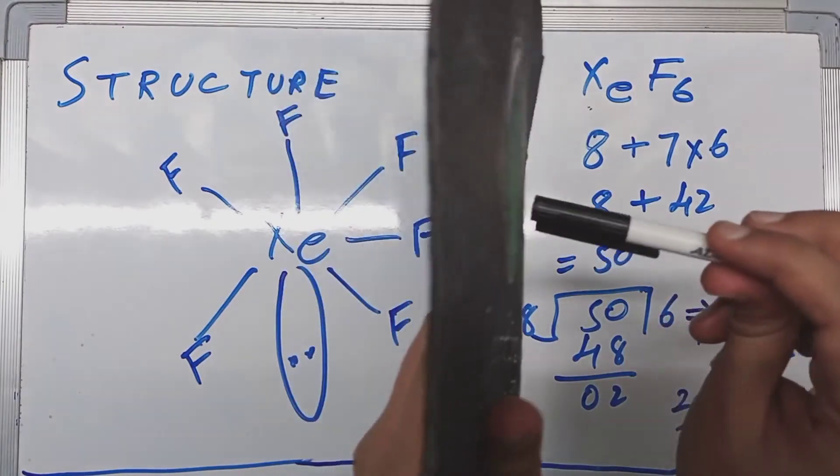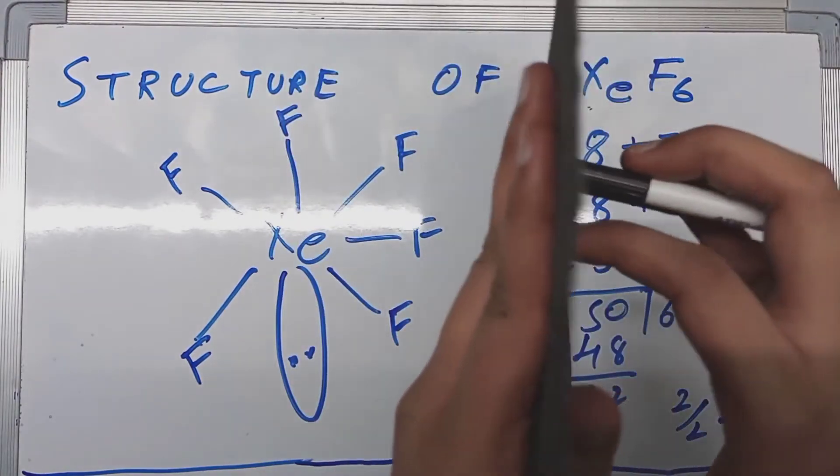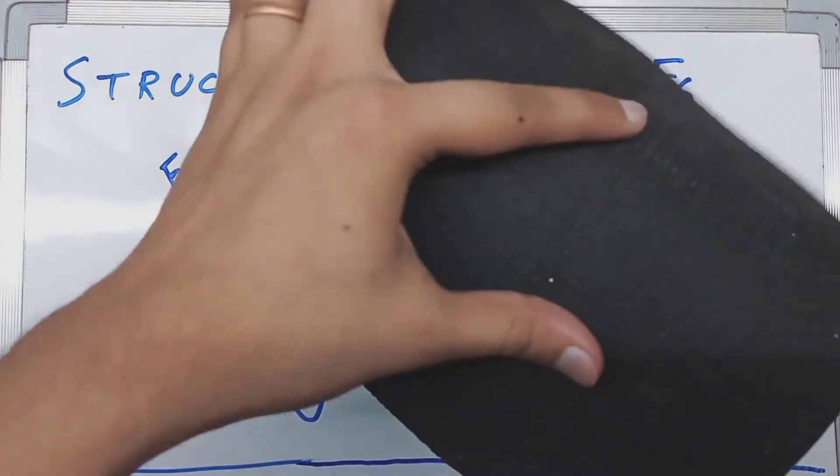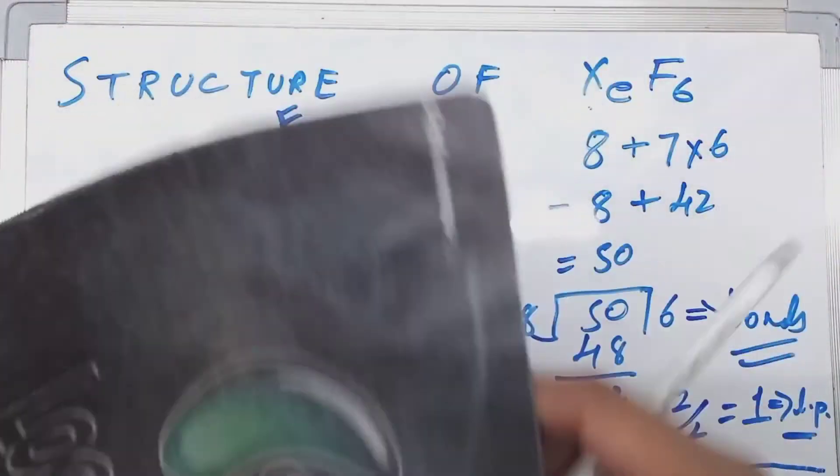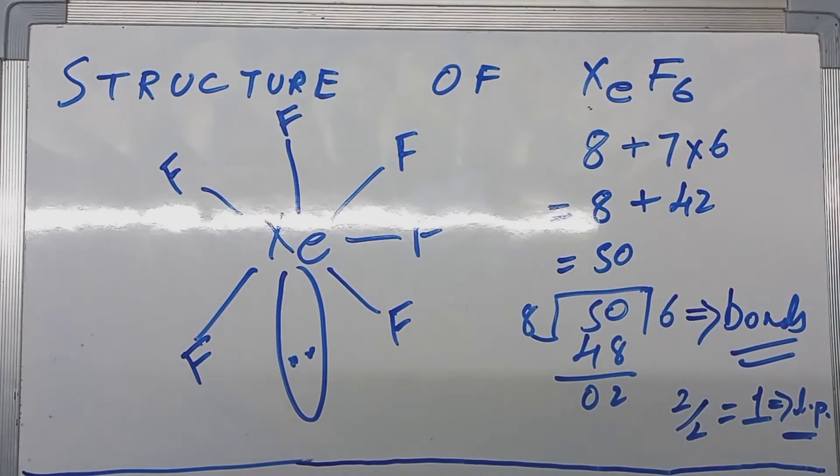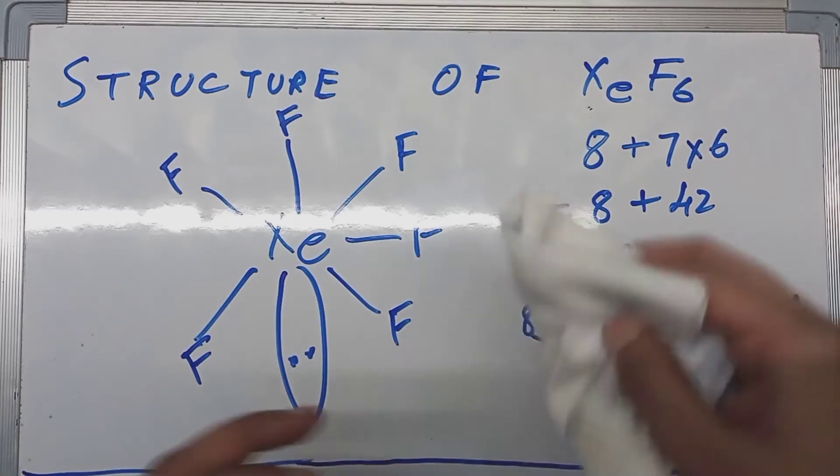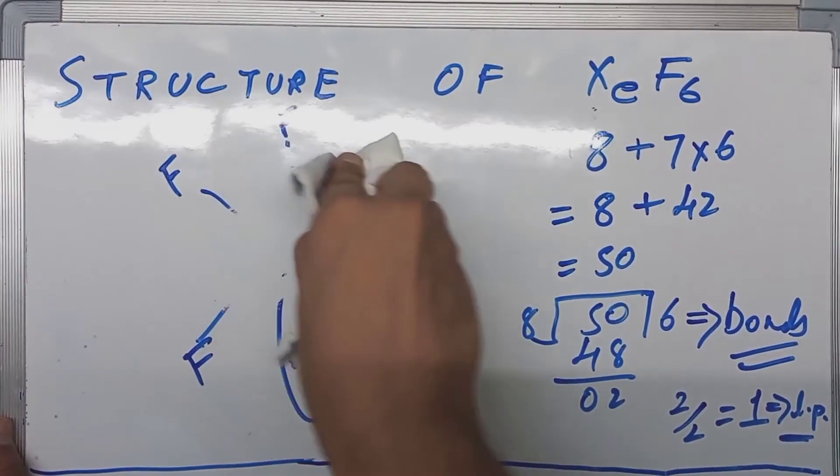The structure was like this. You have the lone pair here. Lone pair is at the back side. So this is the structure, and now I will draw a 3D-based diagram so you have a better understanding of what I am talking about.